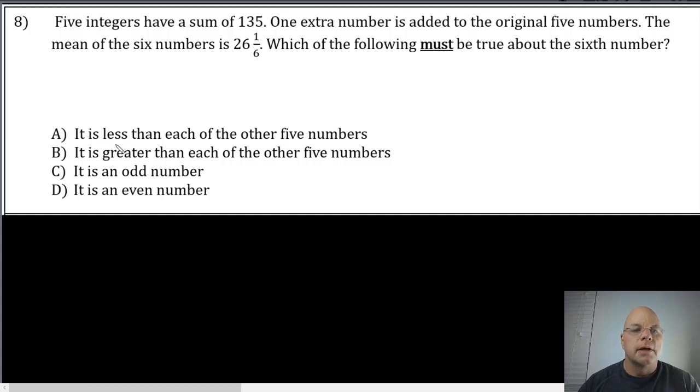We'll start with problem 8 on page 3. Problem 8 says five integers have a sum of 135. One extra number is added to the original five numbers. The mean of the six numbers is 26 and one-sixth. Which of the following must be true about the six numbers?